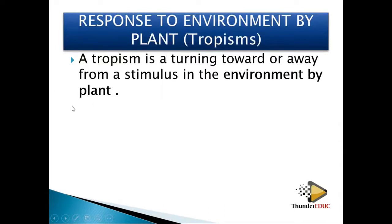When you talk about turning towards or away, this must be a growth response — plants must be growing towards or away from the stimulus. A stimulus is a change in the environment, for example light falling on the plant, gravity, or the amount of water. Tropism is a result of a plant responding to a stimulus in the environment.